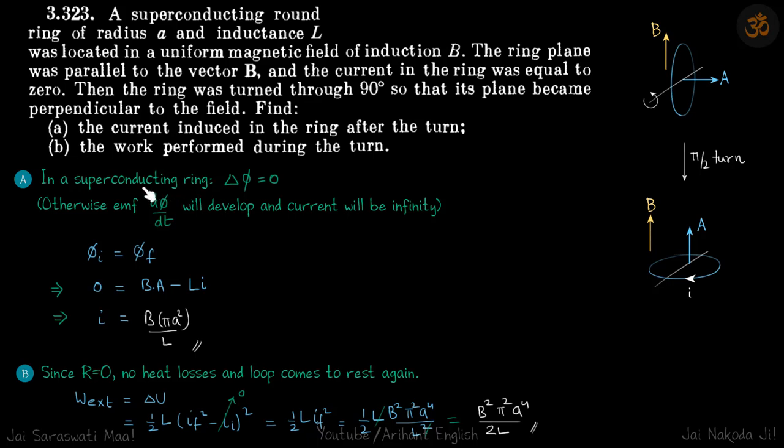Now we know that in superconducting ring, change in flux is zero. The proof is simply that if the change in flux is not zero, then this EMF dΦ/dt will also not be zero. And if this is not zero,